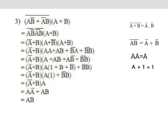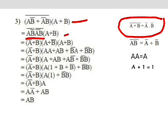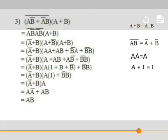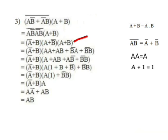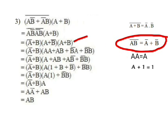Next example: (A B complement plus A complement B) whole complement into (A plus B). Applying De Morgan's theorem, A B complement whole complement into A complement B whole complement, then expanded to (A complement plus B) into (A plus B complement) into (A plus B), since A plus B whole complement equals A complement into B complement, and A B complement equals A complement plus B complement.